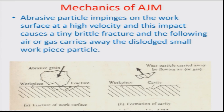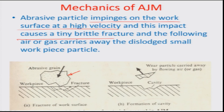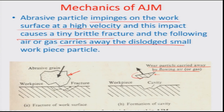As far as the mechanics of the AJM process goes, a sharp abrasive particle with various edges and corners impinges on the work surface at high velocity. This impact causes a tiny brittle fracture — a cavity forms corresponding to the shape of the abrasive particle. The flowing air or gas that carries the abrasive then carries away the dislodged small chip. So that is how actual material removal occurs in abrasive jet machining.